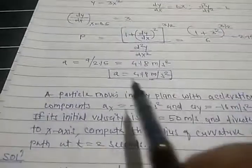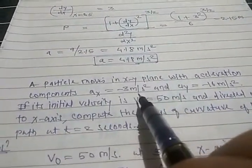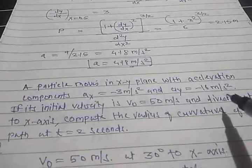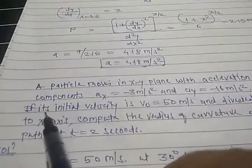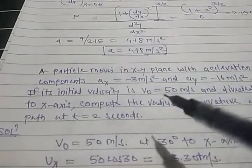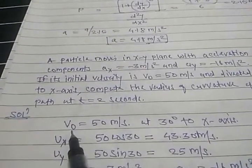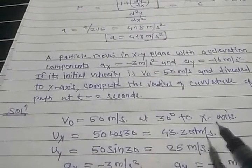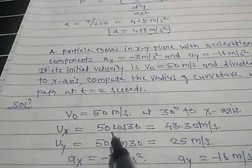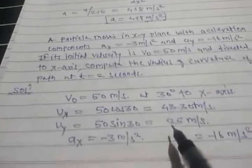Next example: a particle moves in the xy plane with acceleration components ax equals minus 3 meters per second squared and ay equals minus 16 meters per second squared. Its initial velocity v₀ is 50 meters per second directed at 30 degrees to the x-axis. Compute the radius of curvature at t equals 2 seconds. So vx equals 50 cos 30 equals 43.3, and uy equals 50 sin 30 equals 25 meters per second.